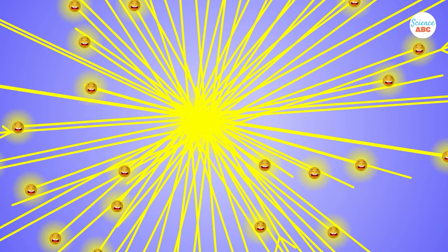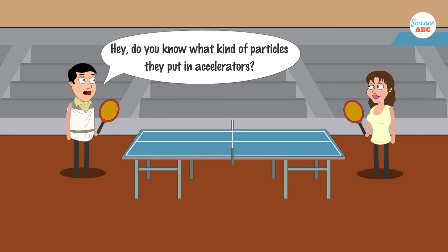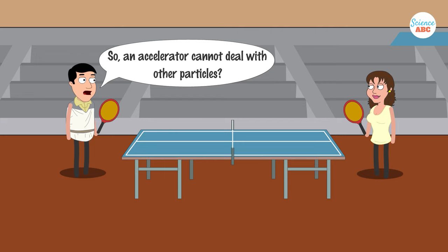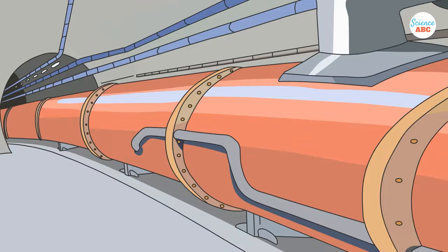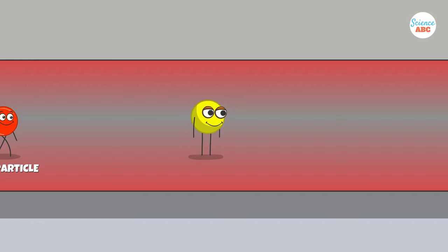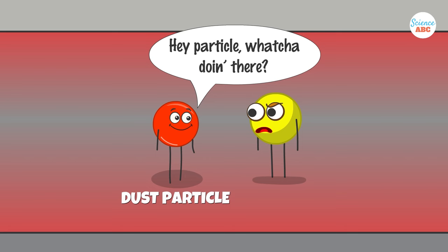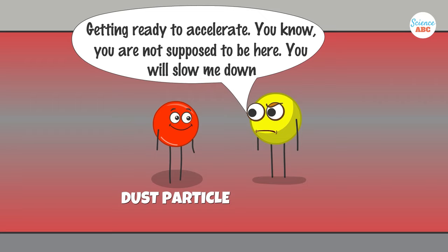The basic working principle of all particle accelerators remains the same. They contain a particle source that provides elementary particles. Although a particle accelerator commonly accelerates protons or electrons, it can also accelerate other particles. The LHC, for example, can accelerate the nuclei of argon, xenon, or lead atoms. This beam of elementary particles travels inside a metal beam pipe, which maintains a vacuum inside. It is critical to ensure that the whole beam setup is devoid of air and dust particles, so that accelerated particles can travel unimpeded and achieve speeds close to the speed of light.